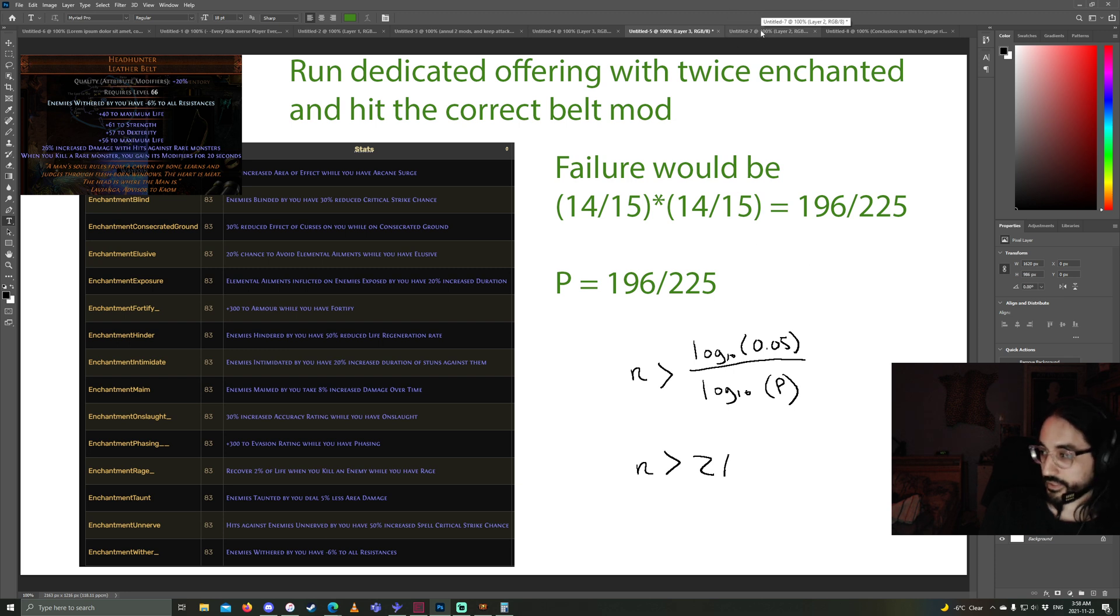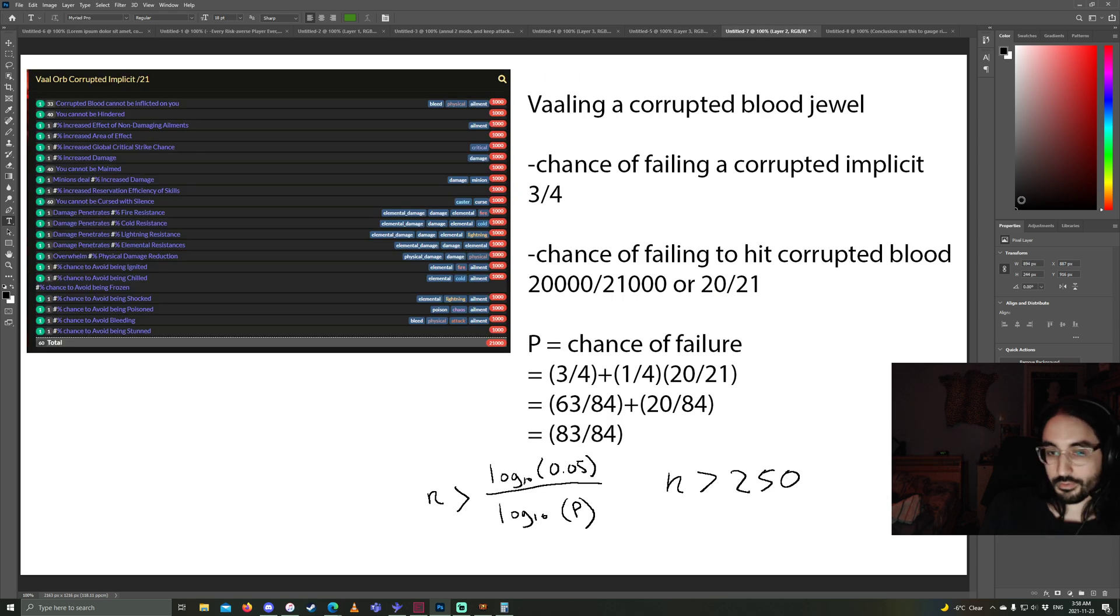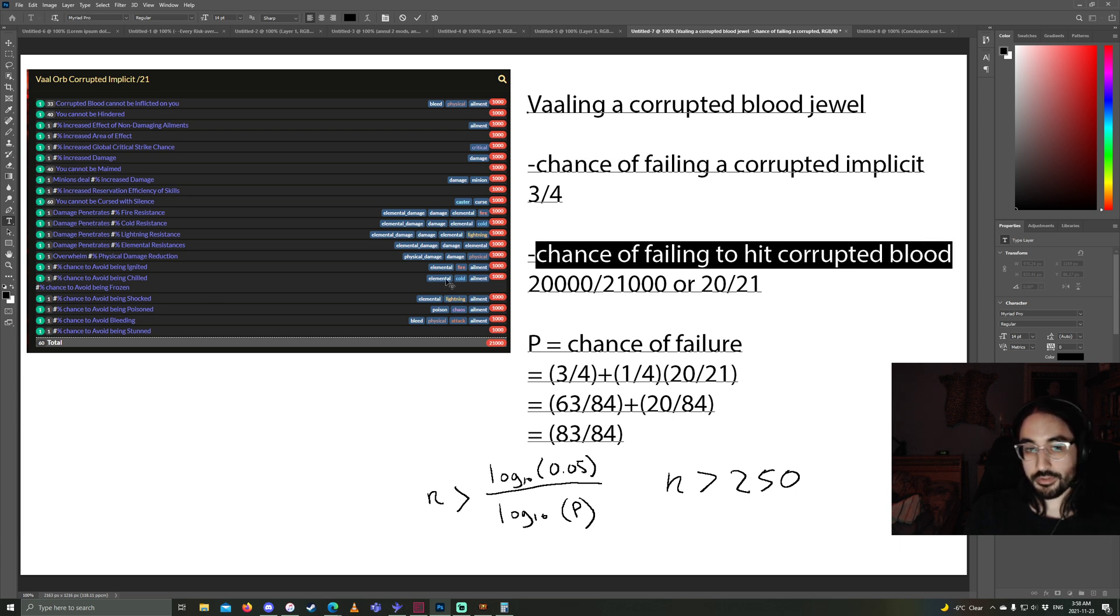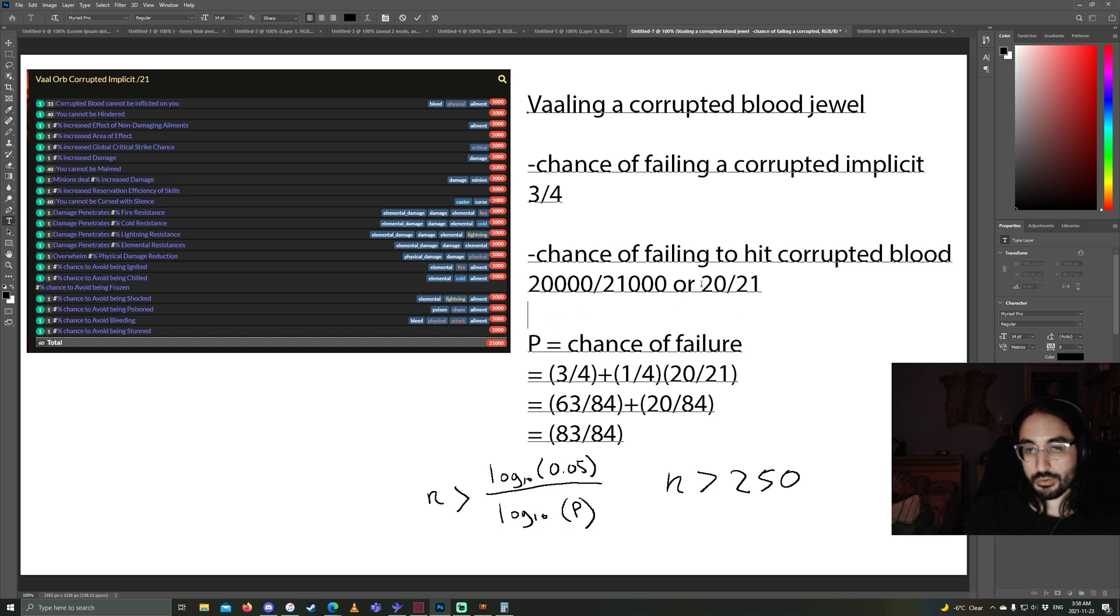Alright, now on to the last example we're going to do, and also the most complicated one. This will be interesting for all you SSF players who need to corrupt your own corrupting blood jewel. So, to do this, we need to, first there's the chance of failing to get any implicit on the vaal orb, which is three quarters of the time. Only one quarter of the time do you get the outcome where you get a vaal implicit.